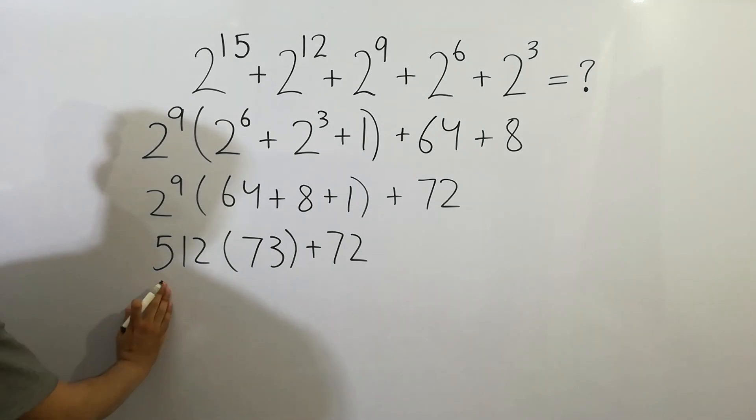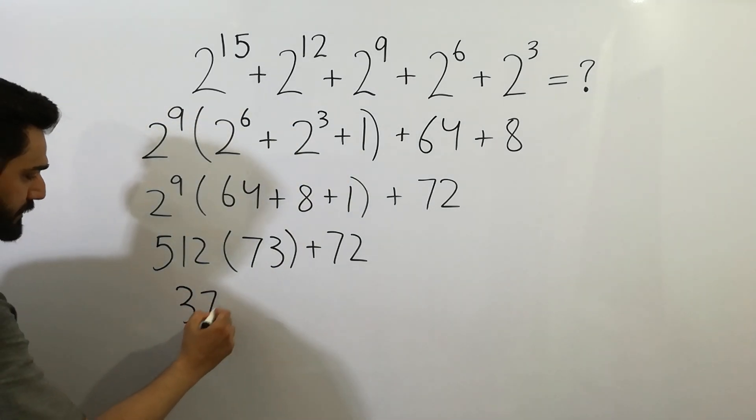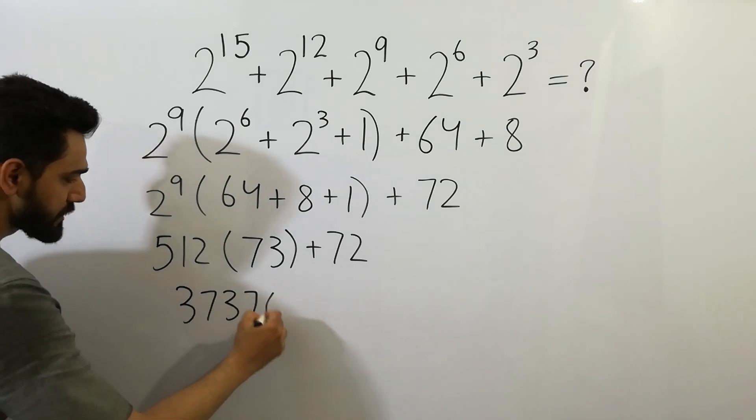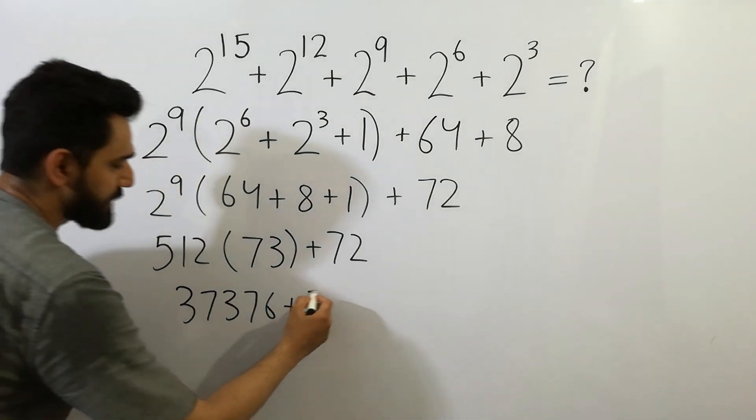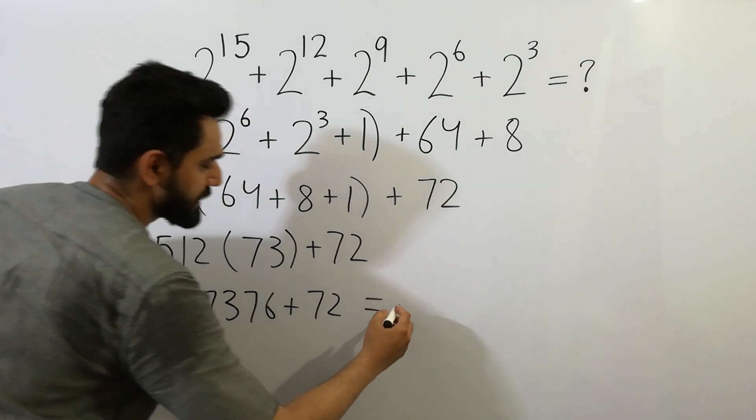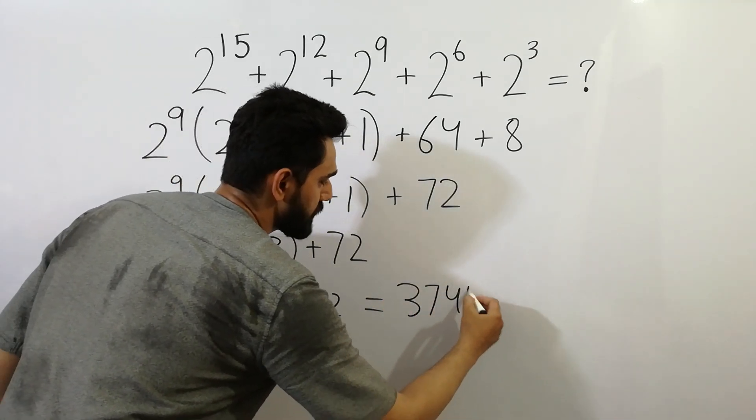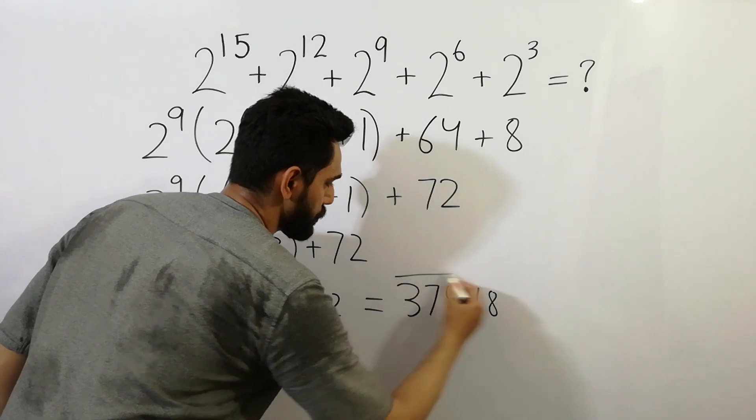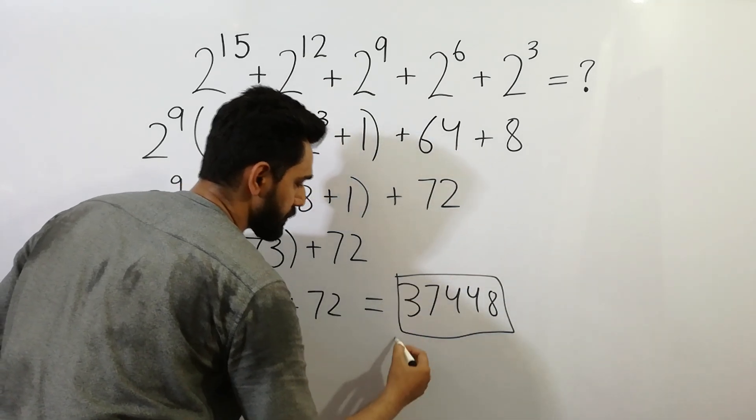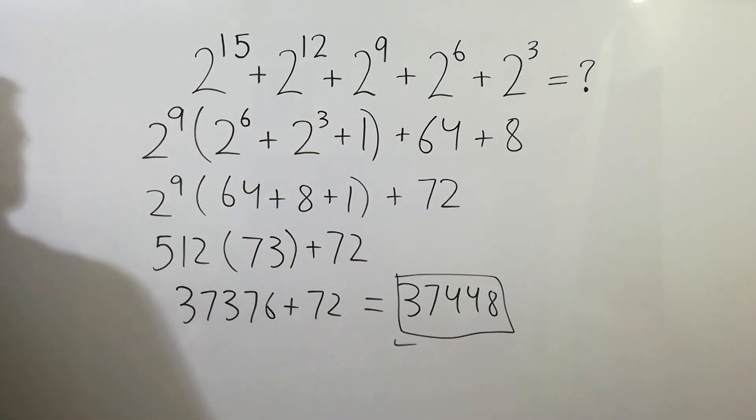512 times 73 is equal to 37,376. Plus 72, we will get 37,448. So that's our answer, okay buddy?